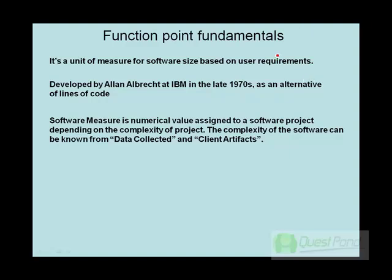The most important factor in the definition is user requirements. Whenever you estimate using function point, the user's perspective is critical — if the user doesn't see that aspect, you cannot estimate it. For example, you may have a Windows background task running behind a customer screen, but if the user cannot visualize why the task is there, you probably cannot estimate that using function point.